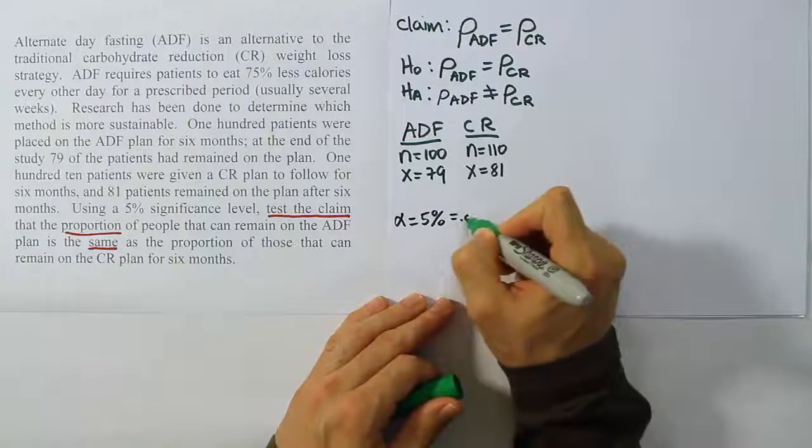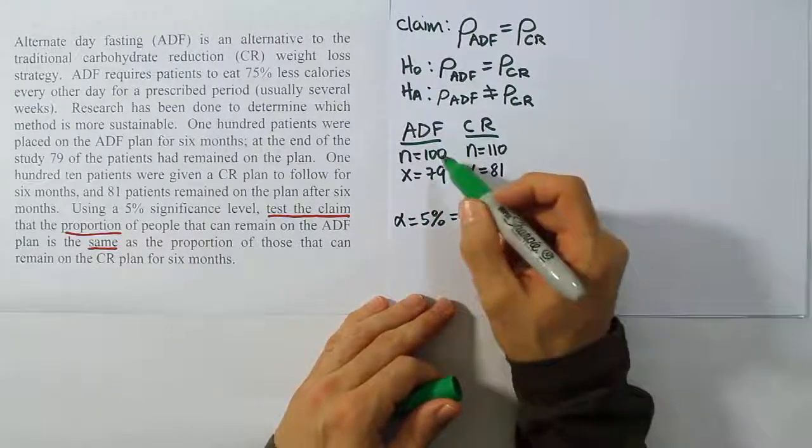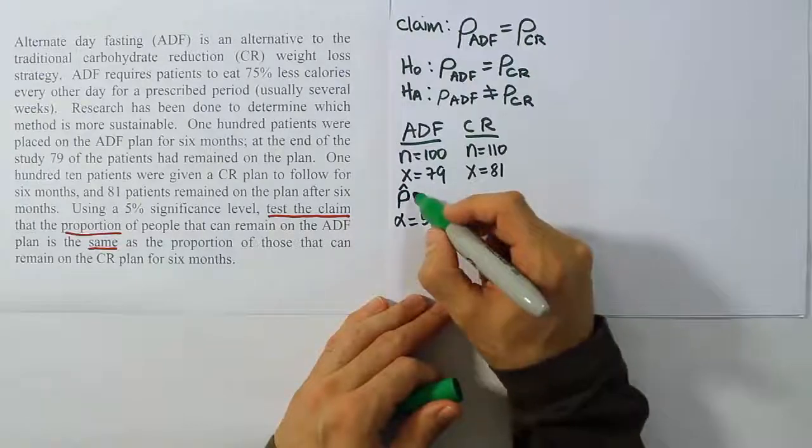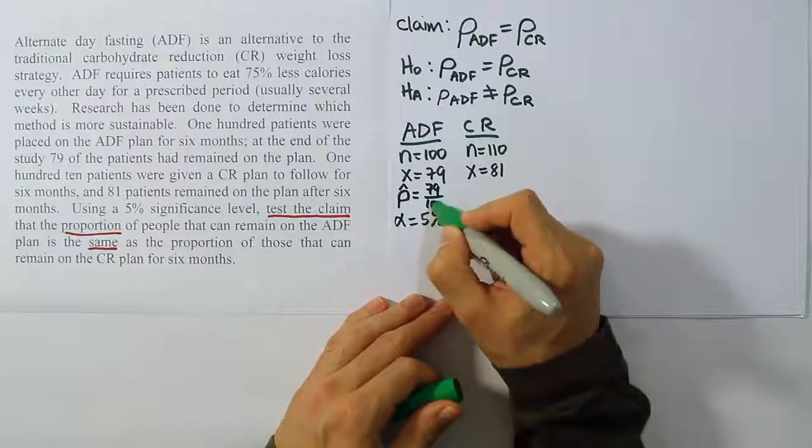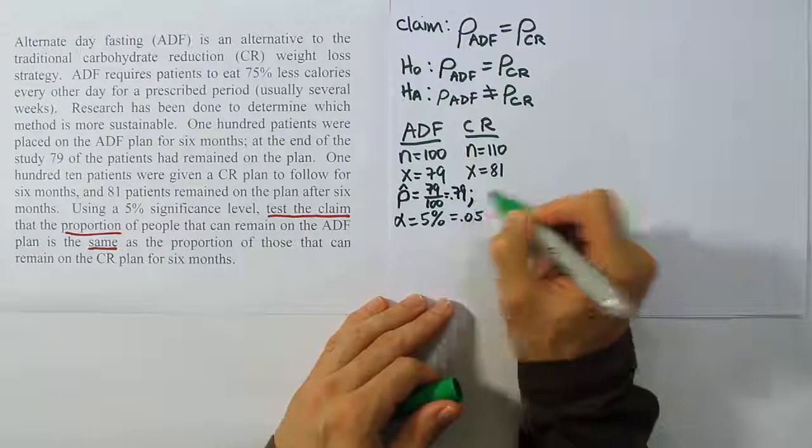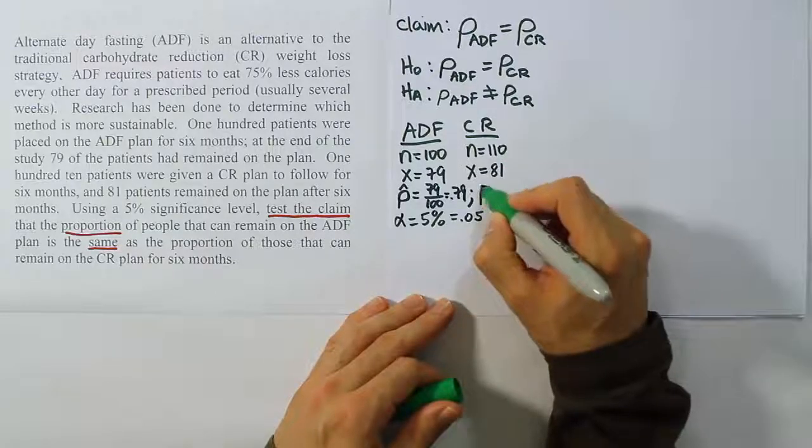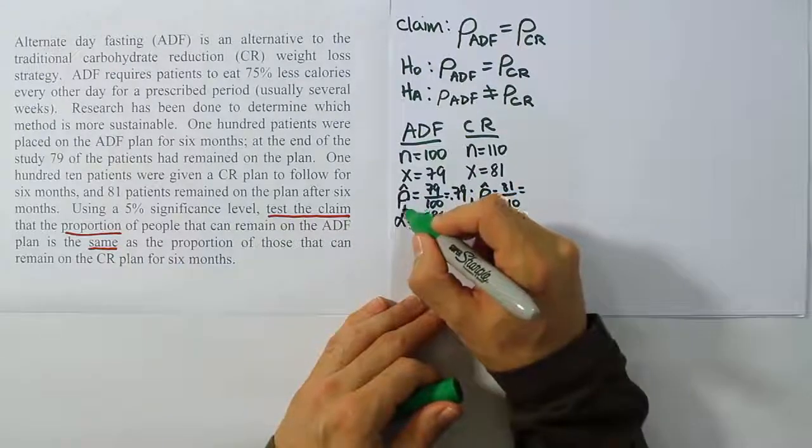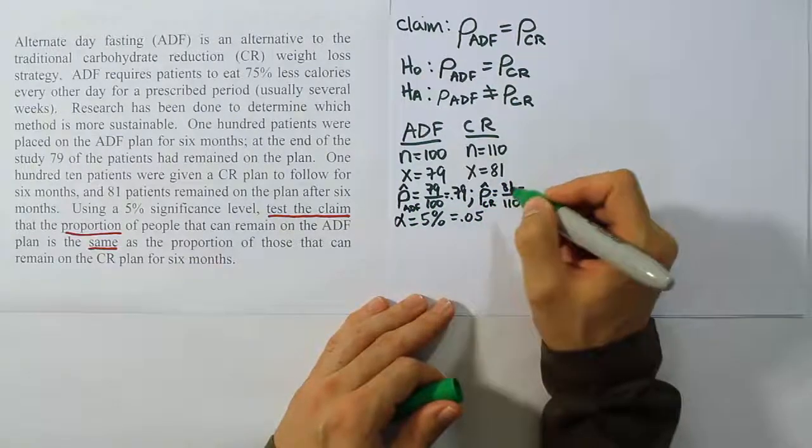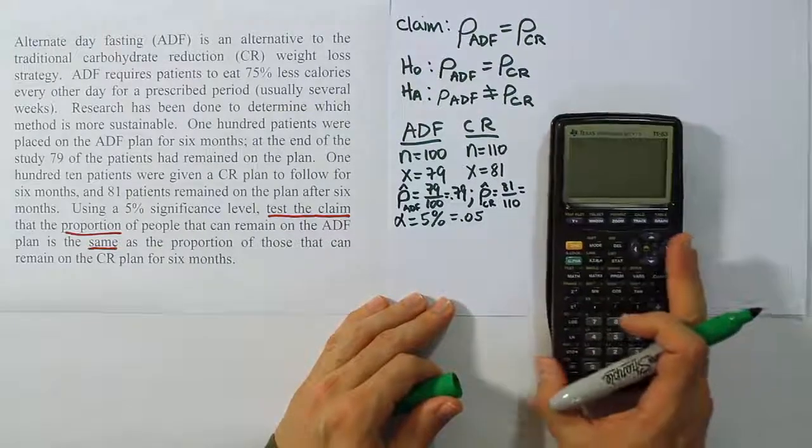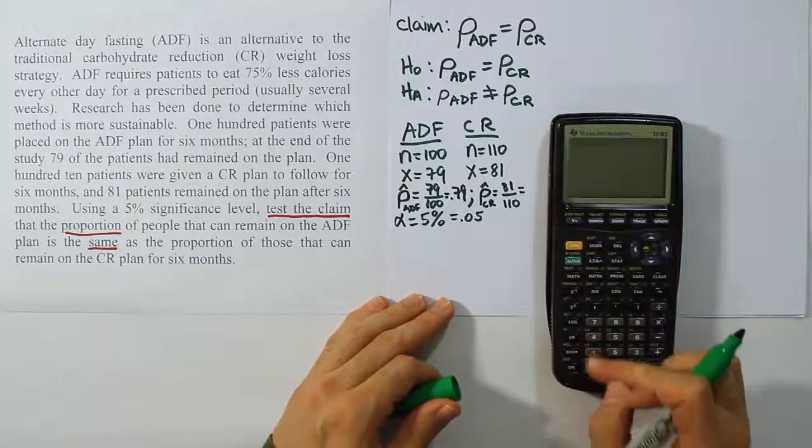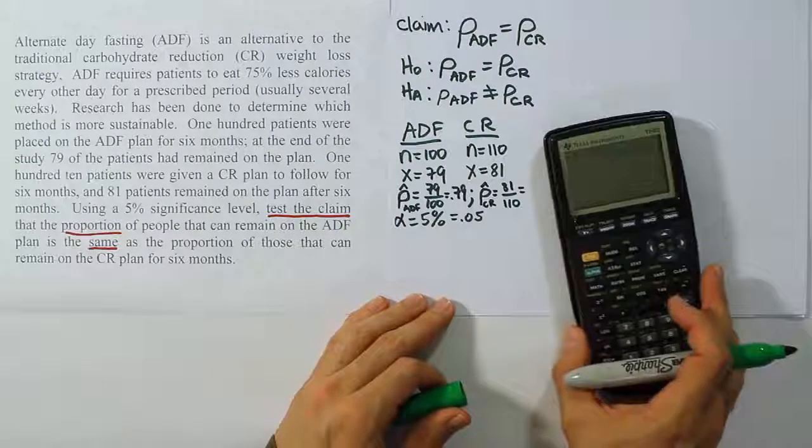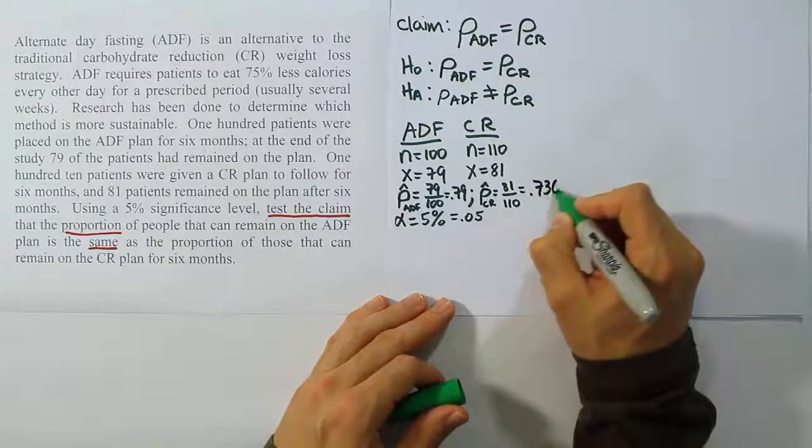I'm leaving a little space because I want to squeeze in here my p-hat values. From this I can estimate the population proportion for these groups by using a sample proportion p-hat. P-hat for the ADF group is going to be X over N because that's the definition of p-hat. So in this case that's 0.79. And for the CR I have the same thing. Its p-hat value will be 81 over 110. Let me just label ADF and CR here at the bottom of these values. Now 81 over 110 is not a nice round number. It's 81 divided by 110. You get a non-ending decimal here. It looks like it is 0.736.